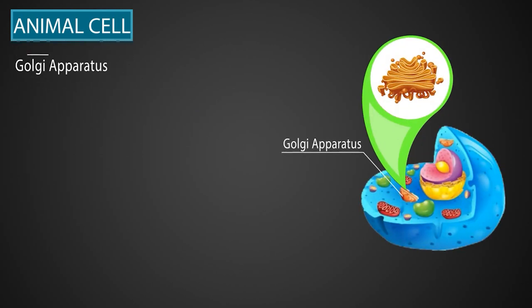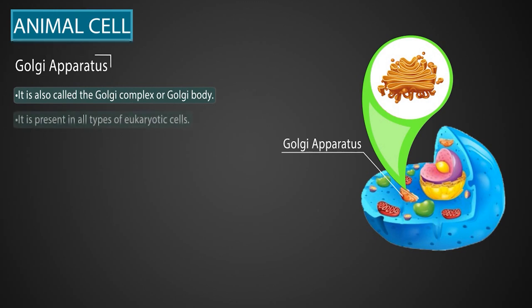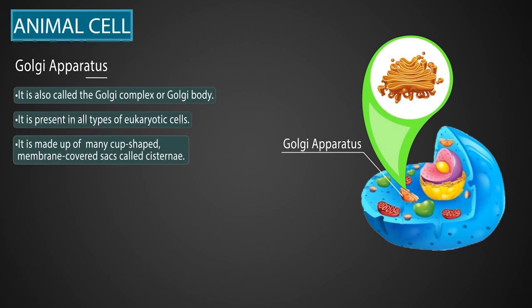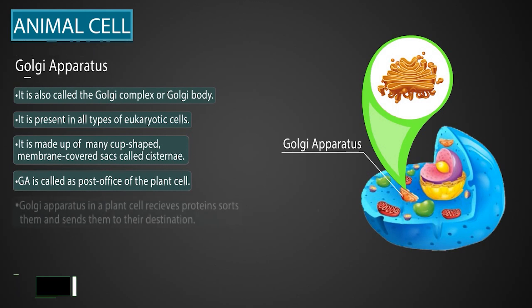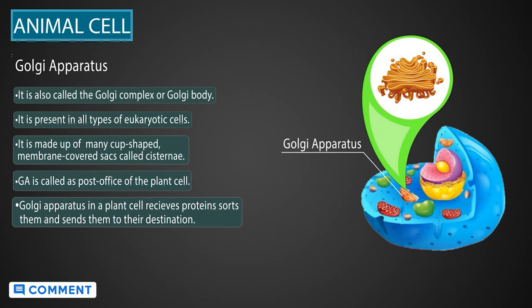Next is the Golgi apparatus, or the GA. It is also sometimes called the Golgi complex or Golgi body. It is present in all types of eukaryotic cells. The GA is made up of many cup-shaped membrane-covered sacs called cisternae. GA is called the post office of the cell. Post offices receive letters, sort them, and send them to their destinations. Similarly, the Golgi apparatus receives proteins, sorts them, and sends them to their destination inside or outside of the cell.